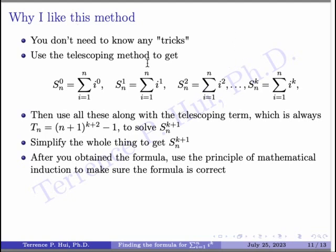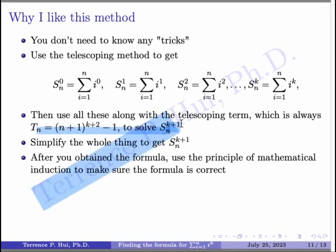I like this method because you don't need any trick — it's a systematic approach. You solve sn0 once, you know the formula. Then you don't need to go back and just use it. You figure out sn1 — once you figure it out, you verify it's correct and you don't need to worry about it, and so on. So let's say you've done this for k all the way to snk. To figure out snk plus 1 is easy. You start with t sub n, which telescopes so that only the (n plus 1) to the (k plus 2) term on the last term survives and the minus 1 on the first term survives. Now that you know t sub n and you know the formula for everything from sn0 to snk, plug everything back in and do the math to simplify — you're going to get yourself snk plus 1.